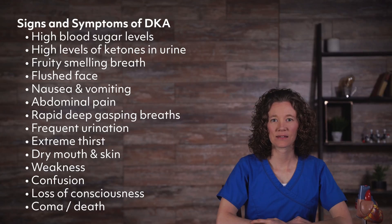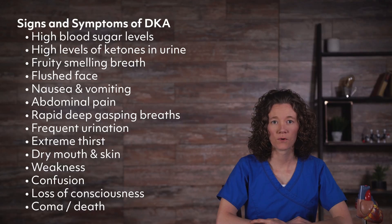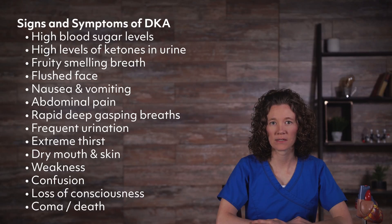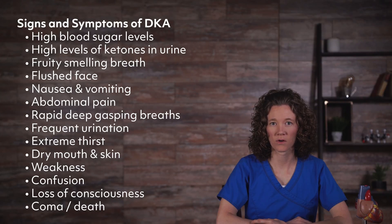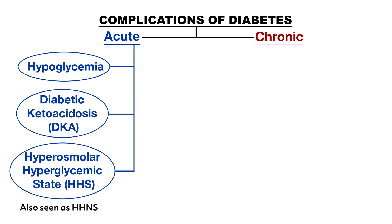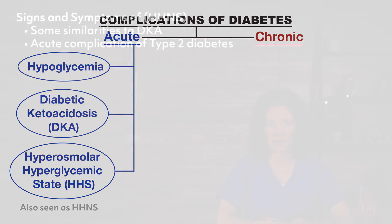Signs and symptoms of DKA include high blood sugar levels, high levels of ketones in the urine, fruity-smelling breath, flushed face, nausea and vomiting, abdominal pain, rapid deep gasping breaths, frequent urination, extreme thirst, dry mouth and skin, weakness, confusion, and loss of consciousness. If left untreated, DKA can lead to coma or death. Treatment involves rehydration with IV fluids, insulin therapy, and electrolyte replacement.